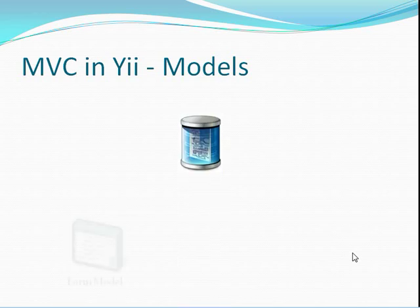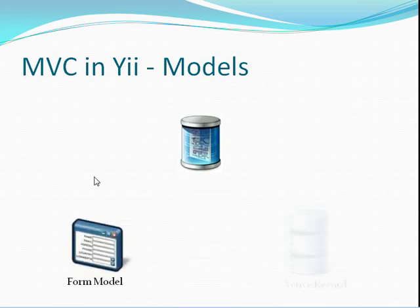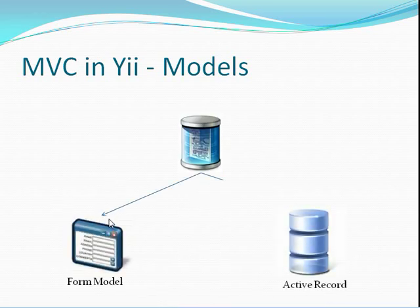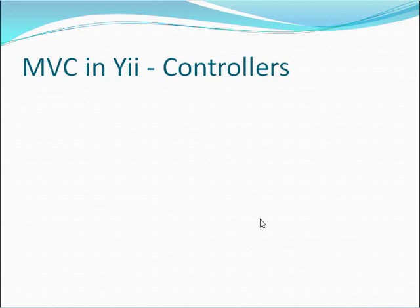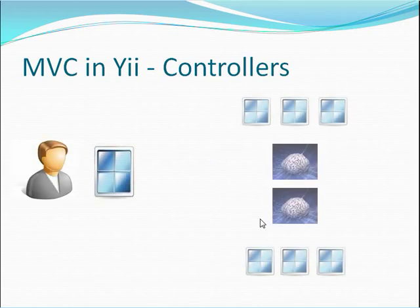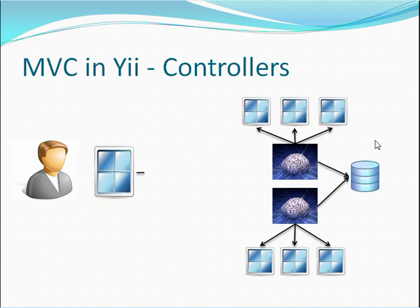All models in YI are derived from one of two base types. Form models are specifically for holding web form state, and active record models are for holding business data state. Some of you may be familiar with this latter concept — it's referred to as the active record architectural pattern. In YI, as in most other web MVC frameworks, controllers take user input or form models and direct actions to be taken against the business model based on that input.